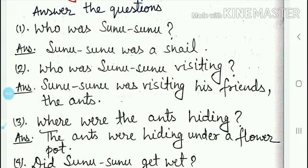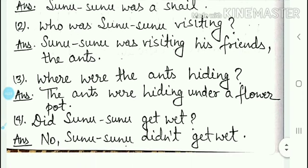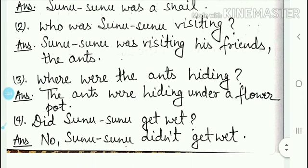The answer is: Sunu Sunu was visiting his friends the ants. Sunu Sunu jo hai apne dost cheetiyon se milne ja raha tha. The third question is: where were the ants hiding? Cheetiyan kahan chup rahi thi?